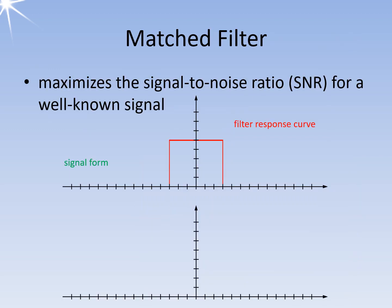A matched filter is the optimal linear filter for maximizing the signal-to-noise ratio for a known signal in the presence of additive stochastic noise. Matched filters are often used in signal detection to correlate a well-known signal, or template, with an unknown signal to detect the presence of the template in the unknown signal. As the animation shows, the output signal of a matched filter has a triangular shape.